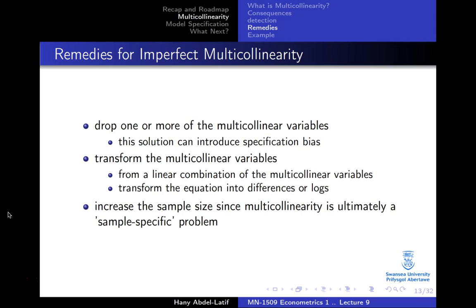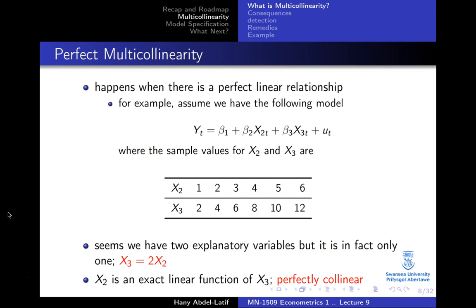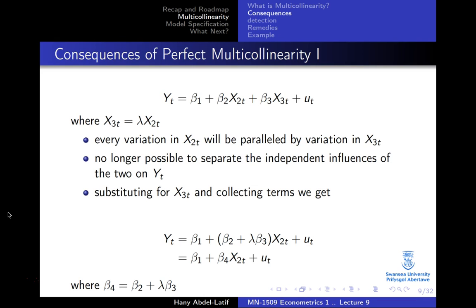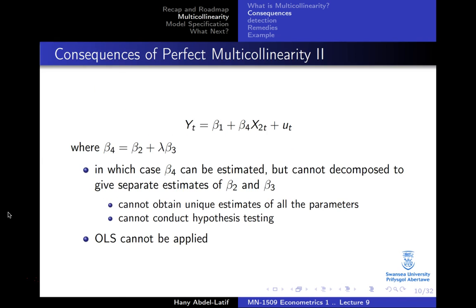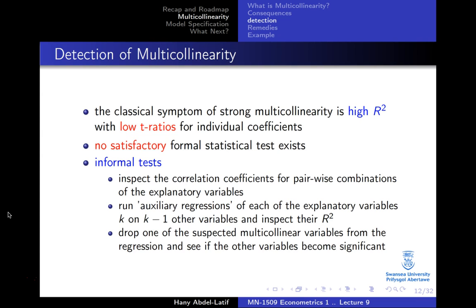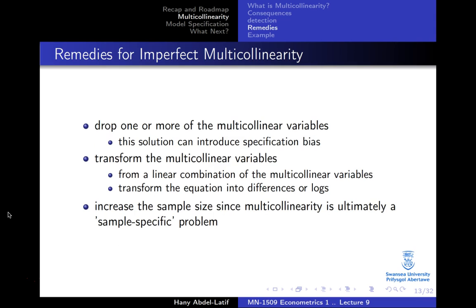You could also transform the multicollinear variables, perhaps using first differences or lags, which is actually more preferable if possible. Also note that multicollinearity can be a sample-specific problem. With only a small number of data points, perfect collinearity might appear, but with 100 or 1000 data points, if the problem only occurred in a small portion of the data, it may not be an issue. Increasing the sample size can sometimes resolve multicollinearity.